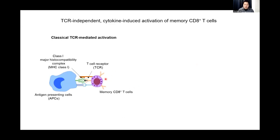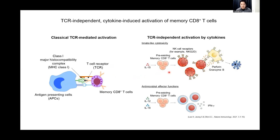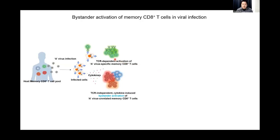Memory CD8 T-cells, with their immunological memory, provide more rapid and enhanced immune response to the previously encountered pathogen. Such enhanced response is derived from the T-cell receptor, TCR, that they express to target their cognate peptide presenting on their target cells. This activation pathway is generally known as the classical paradigm of memory CD8 T-cell activation.